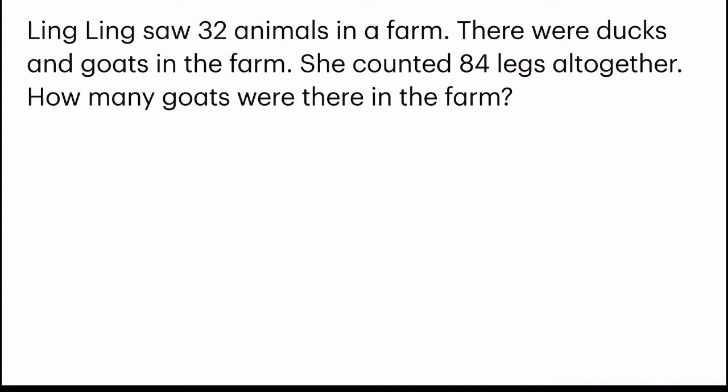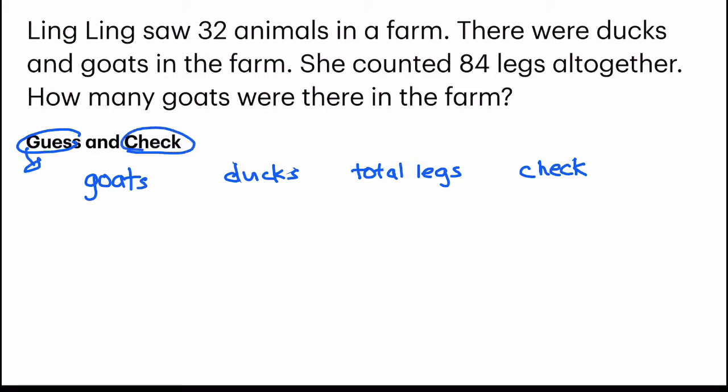The second method that we're going to try to solve this question is using guess and check. We have to come up with a table. I have come up with a very simple table to help you. We'll start off with goats. That's our first variable. And then ducks for the second one. And the third one is the total legs for both goats and ducks. And we have the last column that's called the check.